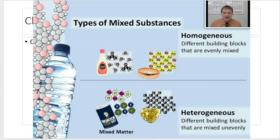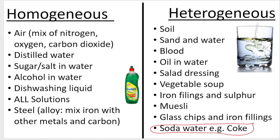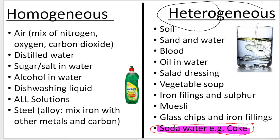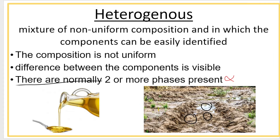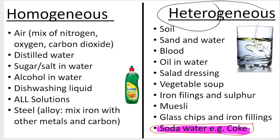Here are some more examples of homogeneous and heterogeneous mixtures, and I know this can be confusing for some students. One that is quite difficult to understand is soda water or carbonated water. Why is that a heterogeneous mixture? The reason is because you can see the bubbles in the water — the bubbles are the gas and the water is the liquid. For heterogeneous mixtures, there are normally two or more phases present.